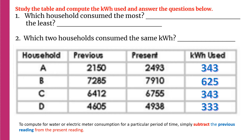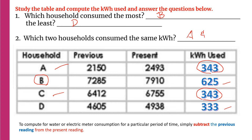First, which household consumed the most? The one with the largest difference — that is 625 — which is Household B. The least consumed is 333, and that is Household D. Next, which two households consumed the same kilowatt hours? Since both have 343, the answer is Households A and C.